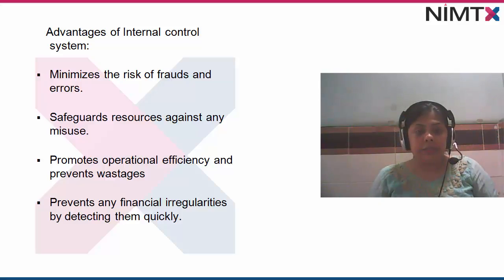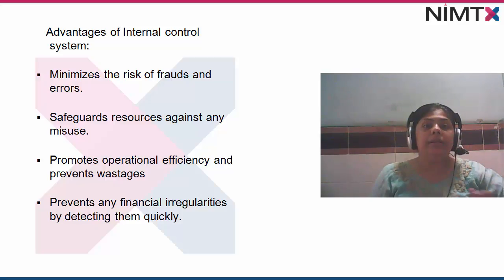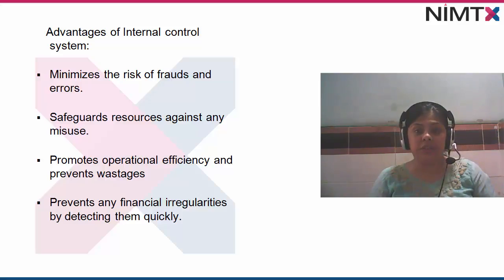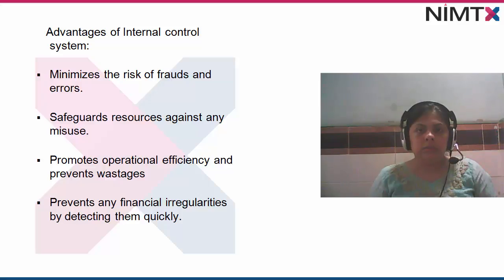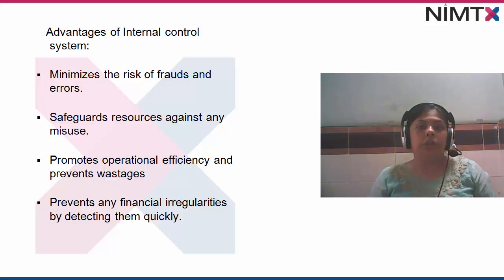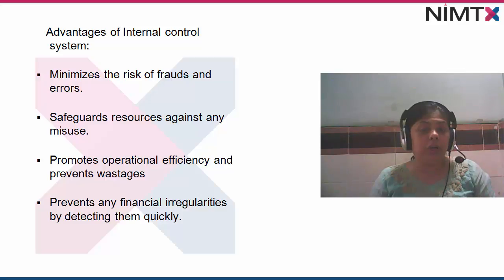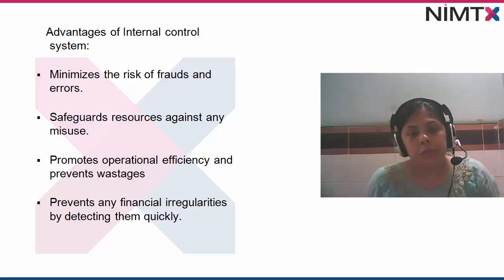Internal control minimizes the risk of frauds and errors. Because there is a control system in the organization, any fraud or error would be checked internally. When people know that there is an effective control, they would be cautious not to make errors or commit fraud. It safeguards resources against misuse, promotes operational efficiency, prevents wastages, gives optimal utilization of resources, and prevents financial irregularities by detecting them quickly.